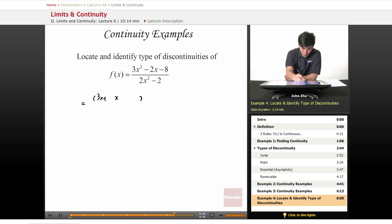3x plus 4, x minus 2. So 3x times x is 3x squared. 4x minus 6x is negative 2x, minus 2 times 4, which is negative 8.